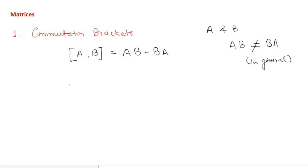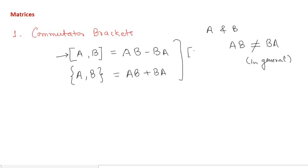If I write two matrices A and B in this bracket notation, it is called the commutator bracket. There is also the anti-commutator bracket {A, B}, which equals AB plus BA. Sometimes this may be written with a minus sign for the commutator and a plus sign for the anti-commutator — don't confuse these notations.